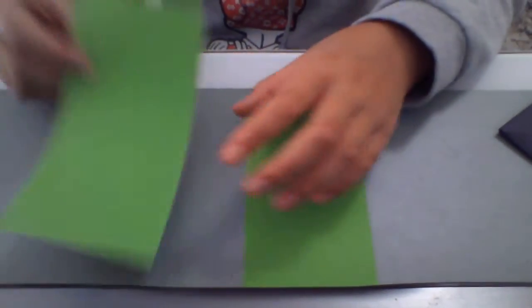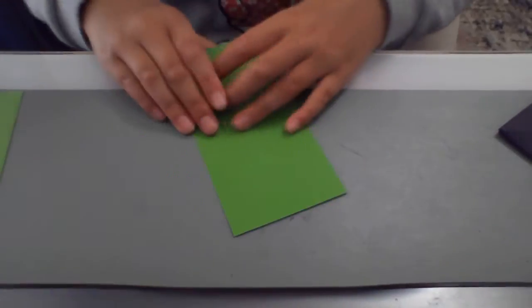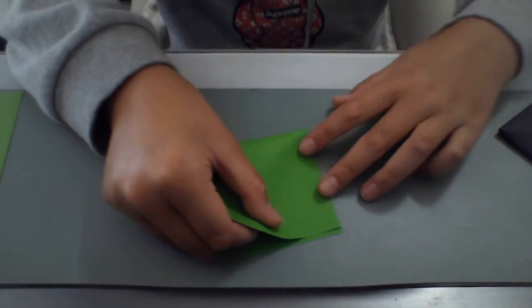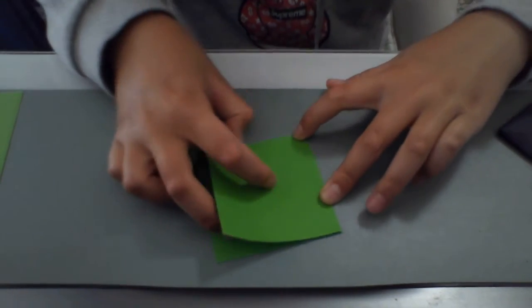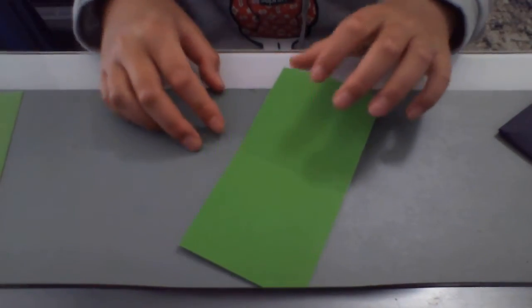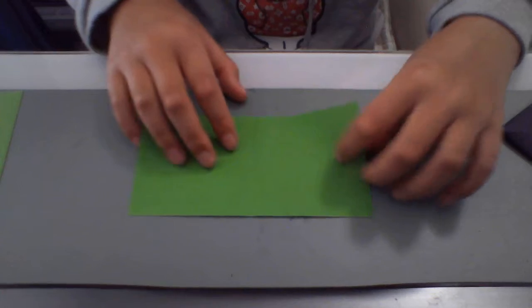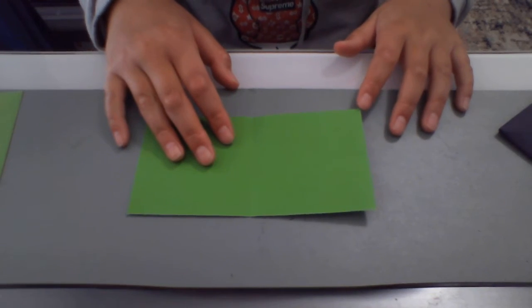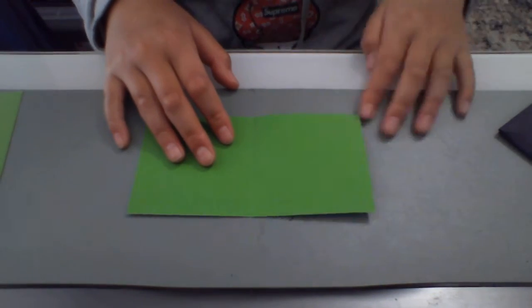Once it's like that, take one of them and fold it in half so that it becomes a square like this. Then unfold and fold this point so that it touches this point.